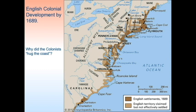This map shows the development of the English colonies by 1689. You can see that they are often hugging the coast. Why do you think the colonists did that? Why was there so much development along the coast?